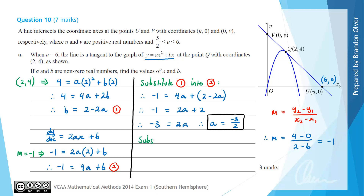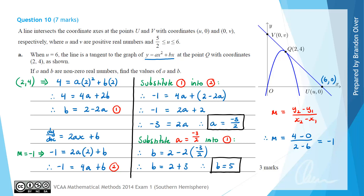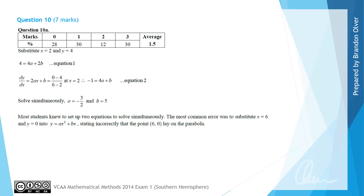Substituting a = −3/2 into equation 1: b = 2 − 2(−3/2) = 2 + 3 = 5. So a = −3/2 and b = 5. From the examiner's report, 30% of students completed this question. Many knew to set up two equations simultaneously; the most common error was incorrectly substituting (6, 0) into the parabola's equation, thinking that point lay on the parabola.